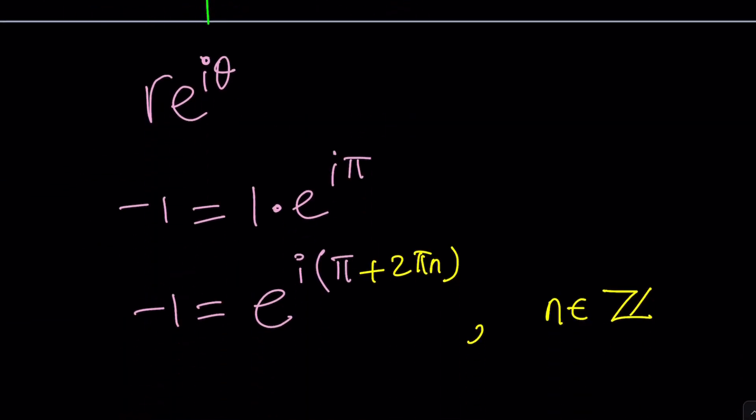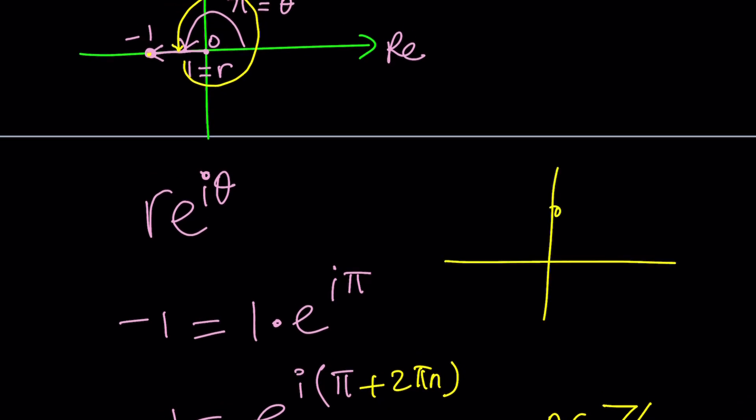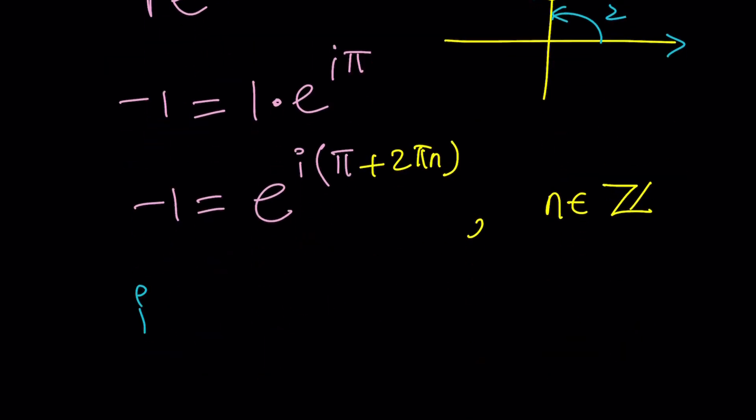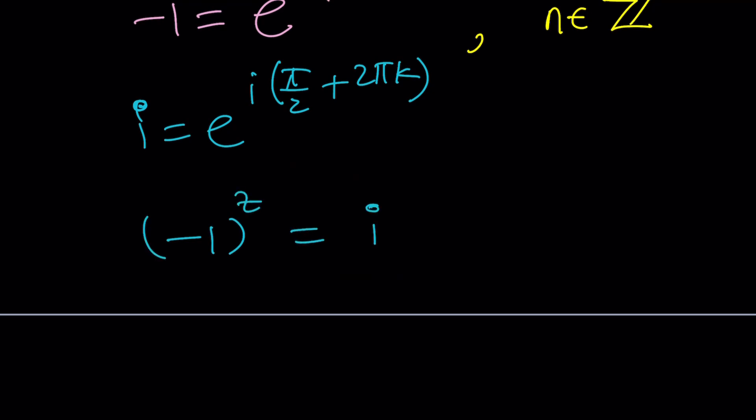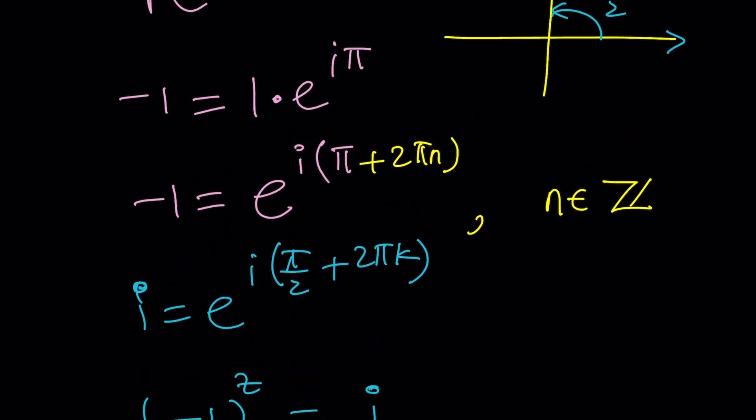Similarly, i is going to be here on the imaginary axis. It's going to make pi over 2 radians. So i can be written as e to the power i times pi over 2, but we still have to use the 2 pi k. Now, when we write an equation like negative 1 to the power z equals i, do we really need to consider adding multiples of 2 pi? This actually has been a really interesting question, and this has caused a lot of debate. Some people say you don't need it, some people say you do. Let's go ahead and explore and see what happens at the end.